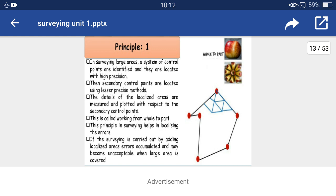The first principle is to work from whole to part. In the figure, there are six red dotted stations, known as control points. In surveying large areas, a system of control points are identified and located with high precision. Then, secondary control points are located using lesser precise methods. The details of the localized areas are measured and plotted with respect to the secondary control points.